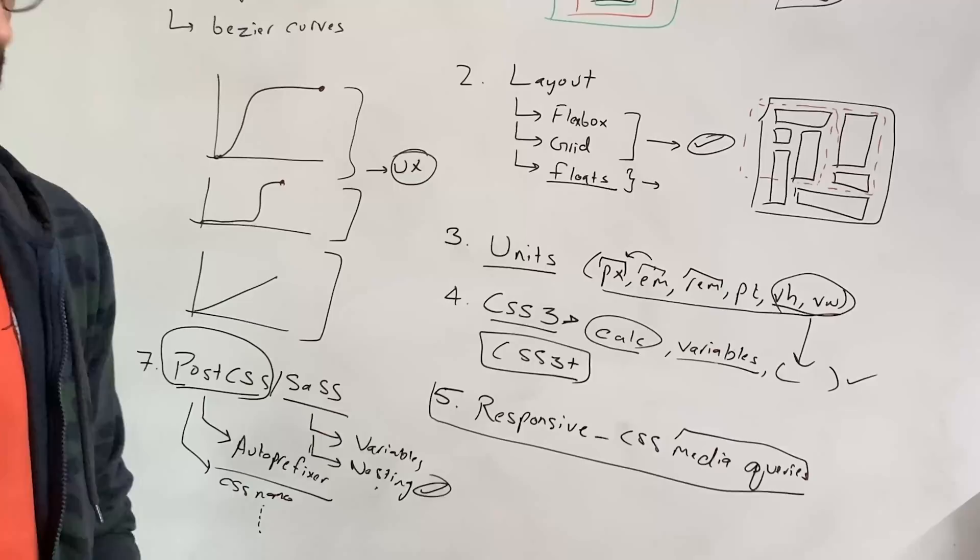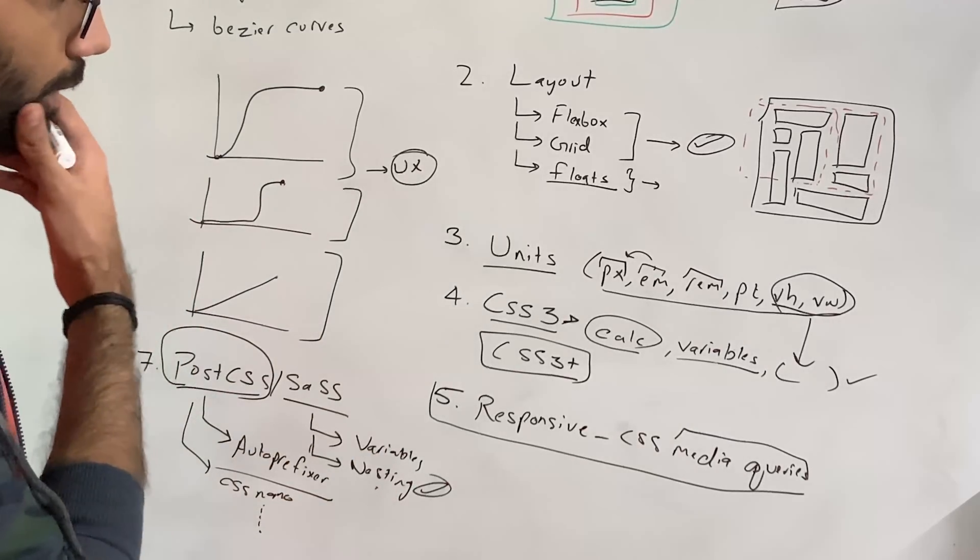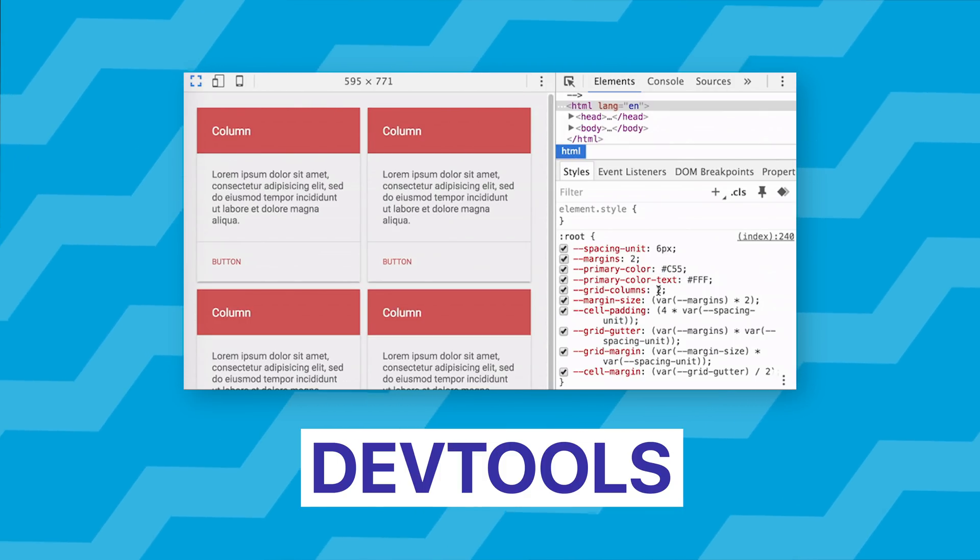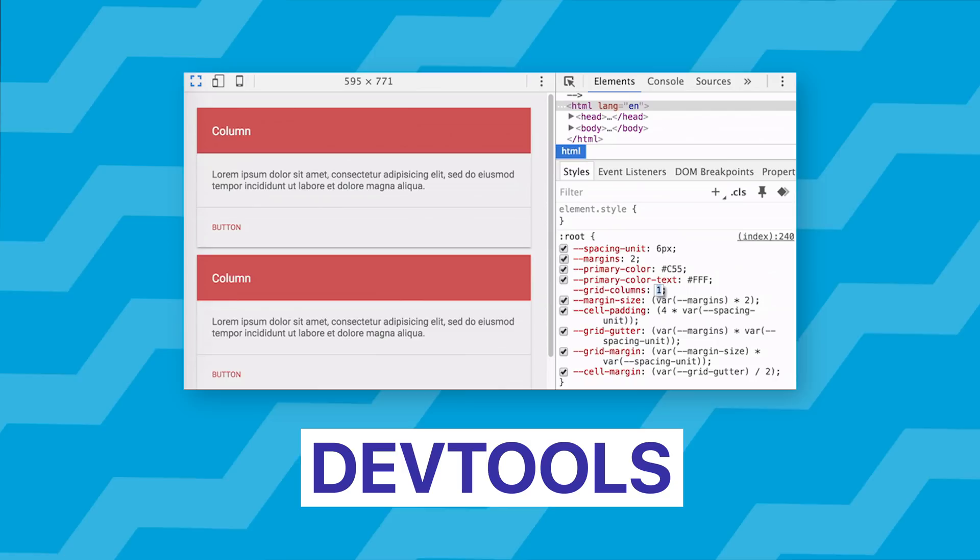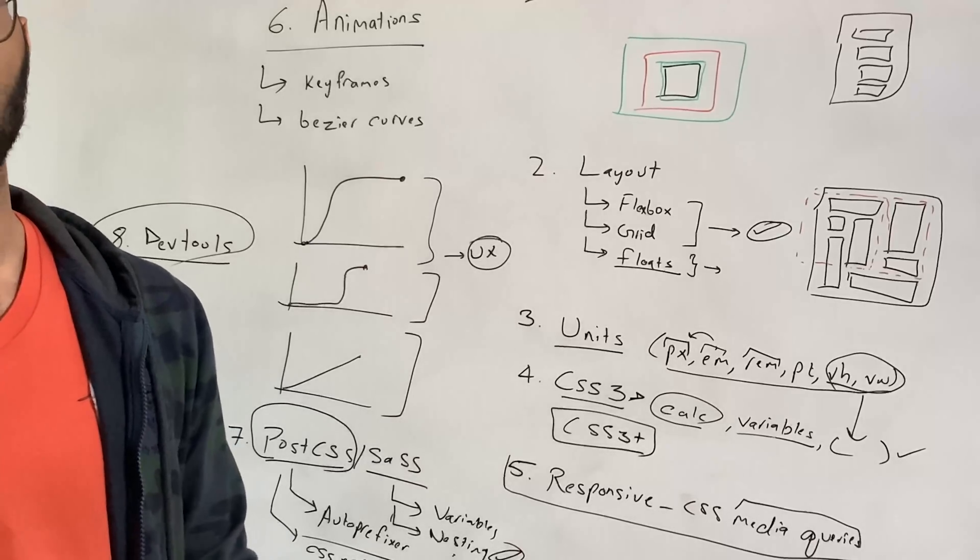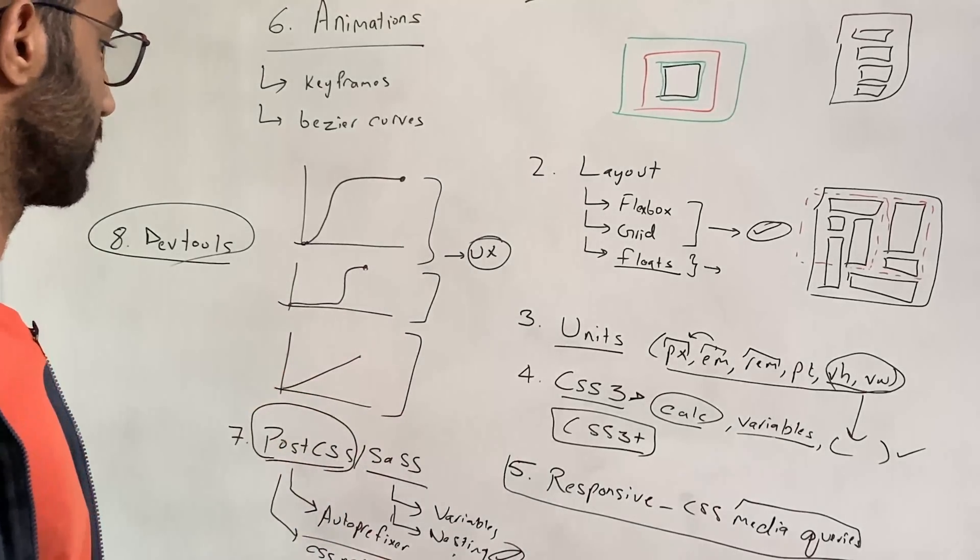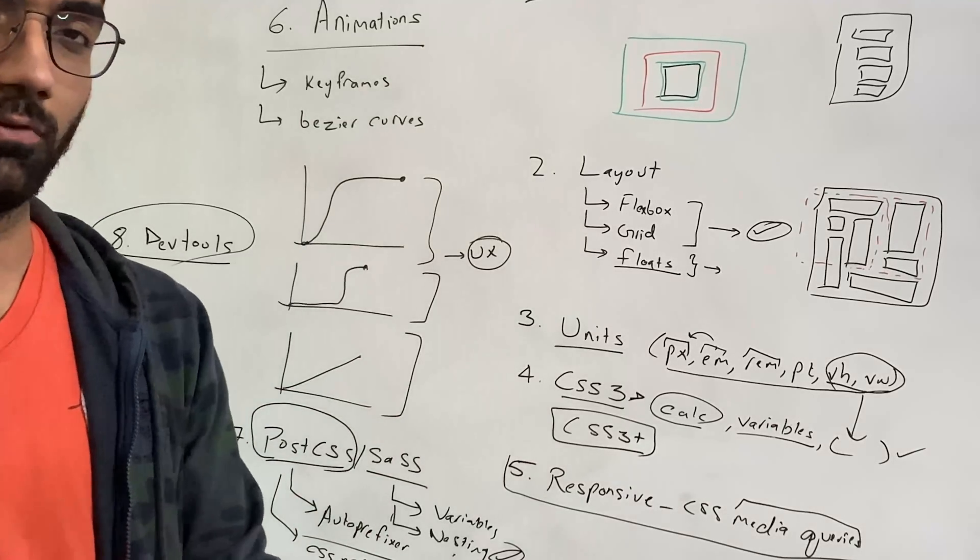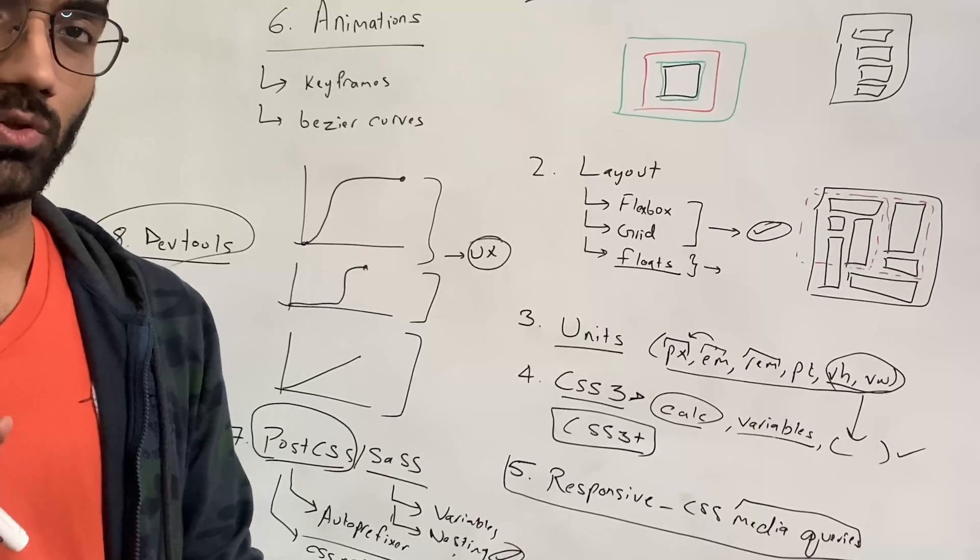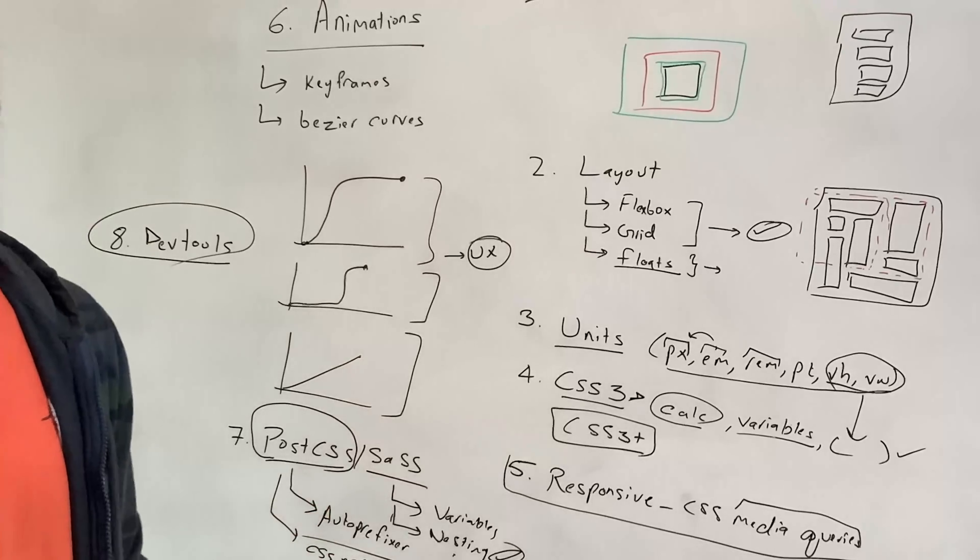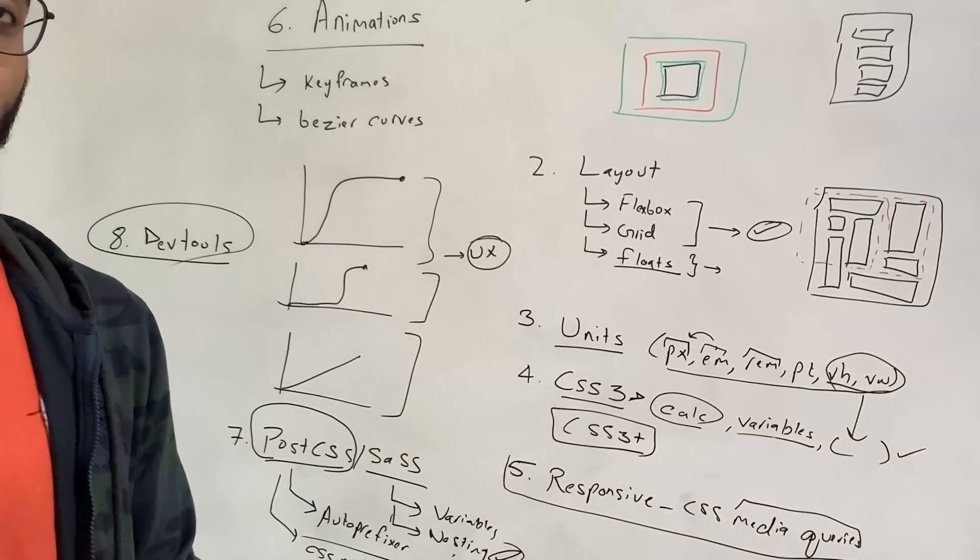And then last but not the least, the eighth point I can think of is knowing your way around dev tools of CSS. Now dev tools is a game changer of course, and you have to learn them as a front-end developer. But knowing how to navigate your way around dev tools is also super important skill, especially because CSS, just like HTML, does not complain if it is not working right.